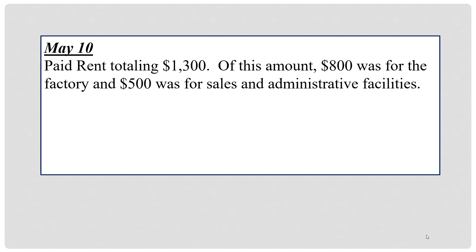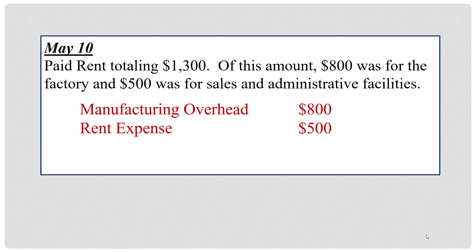May 10, paid rent totaling $1,300. When you see that rent is paid, you must ask: on what? Of this amount, $800 was for the factory and $500 was for sales and administrative facilities. For the product costs — the $800 on the factory — we'll debit manufacturing overhead. Ask yourself: is this product or period cost? It's product cost. Is it direct material? No. Is it direct labor? No. Then it must be manufacturing overhead — product costs that are not direct material and not direct labor. For the period cost part on the sales and administrative facilities, you will debit rent expense for $500, and credit cash.